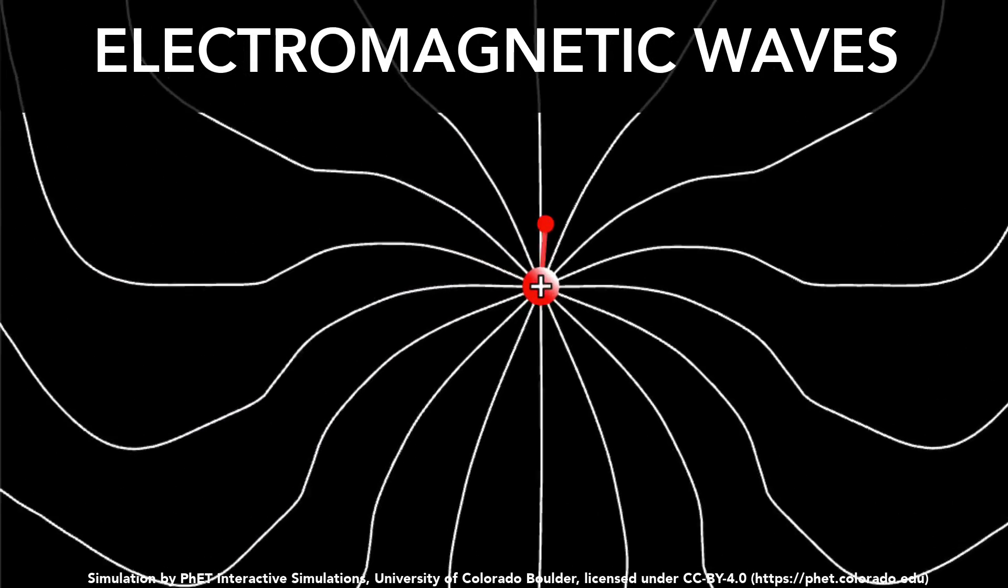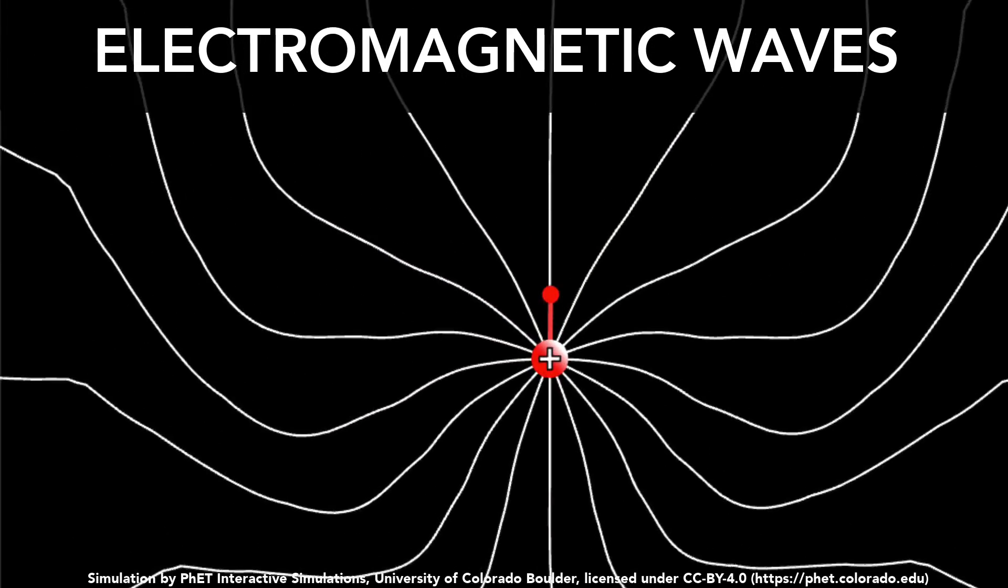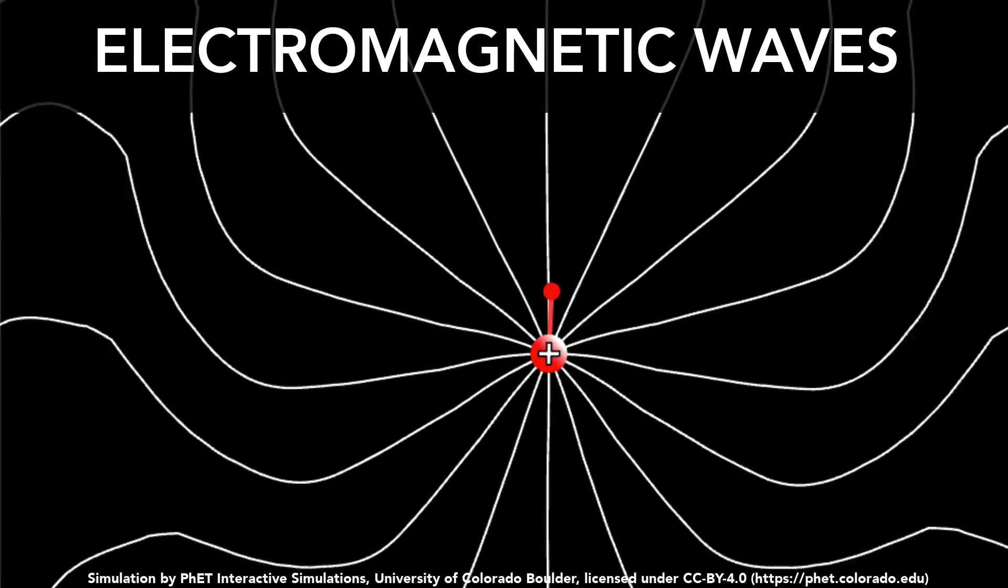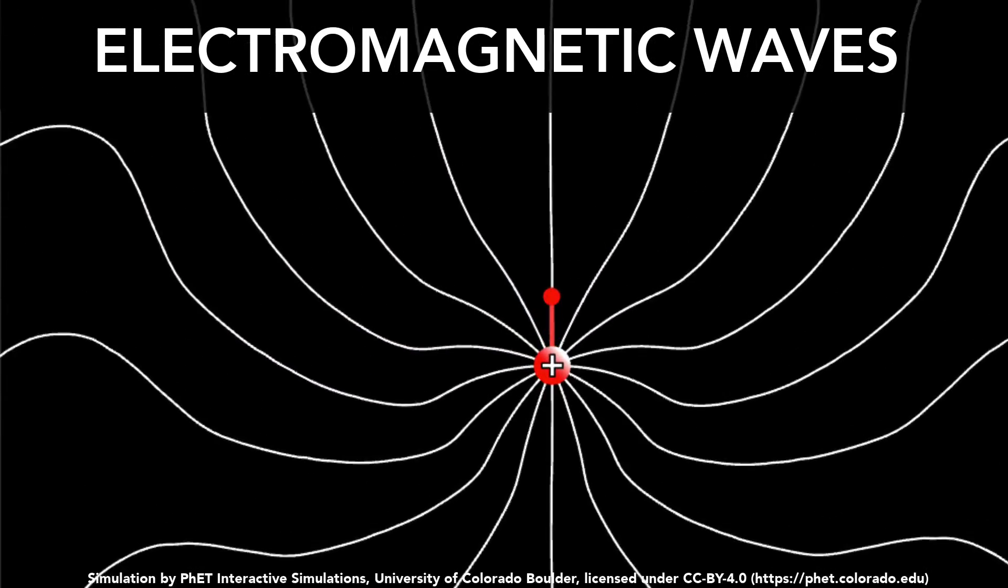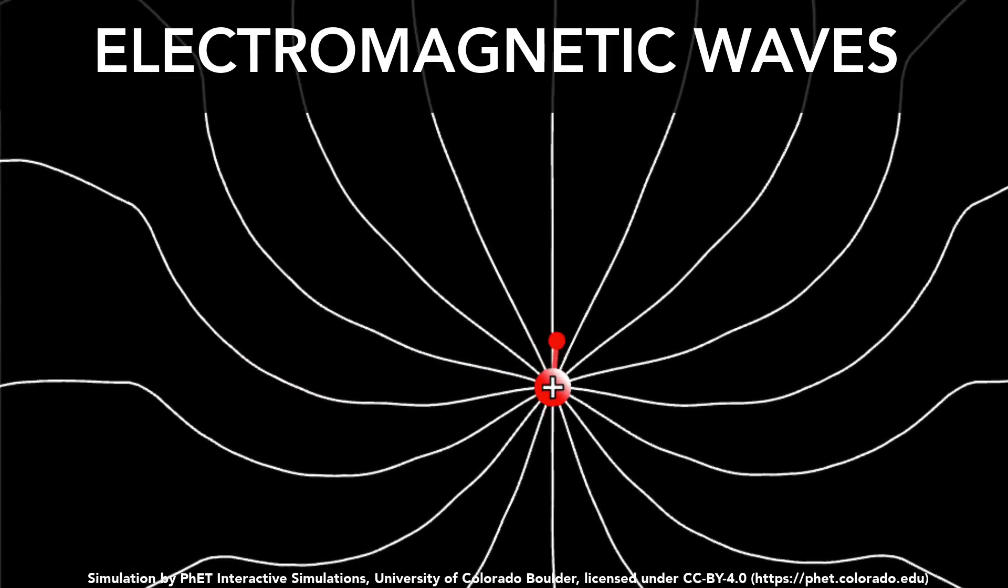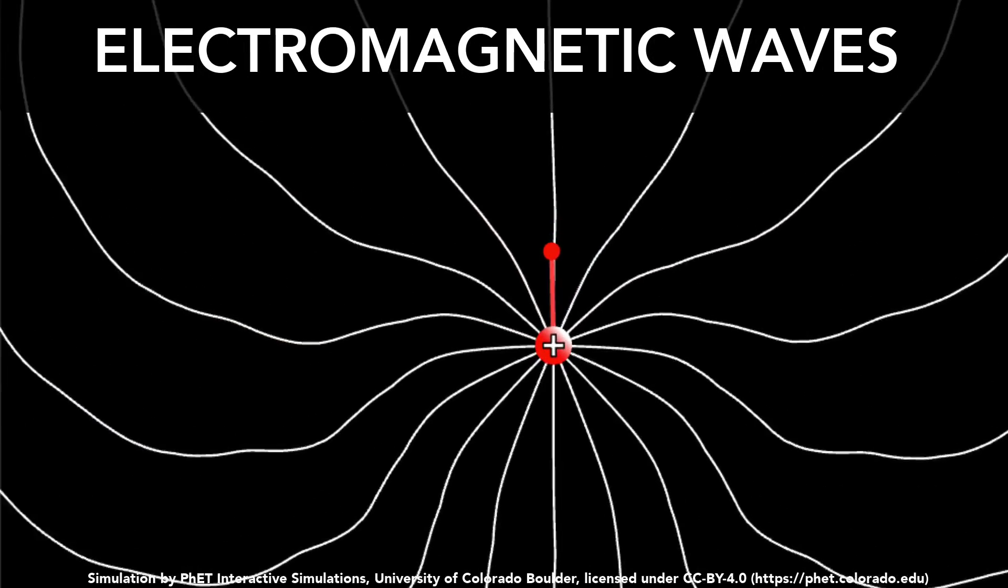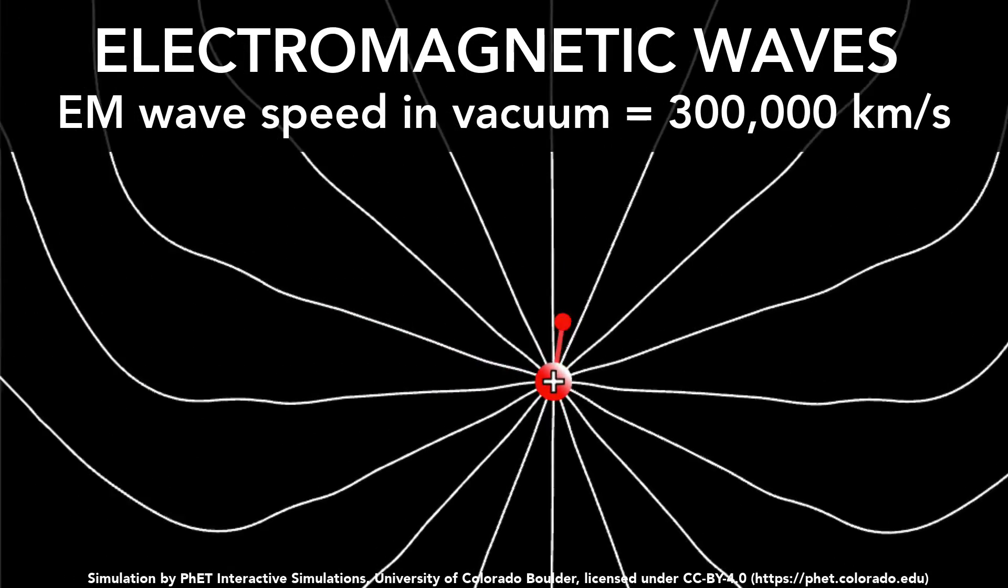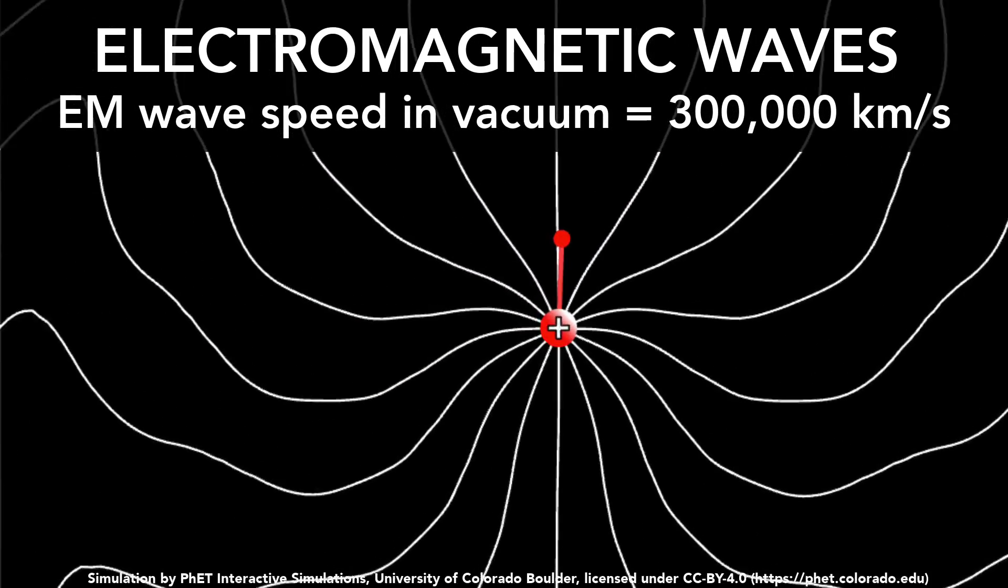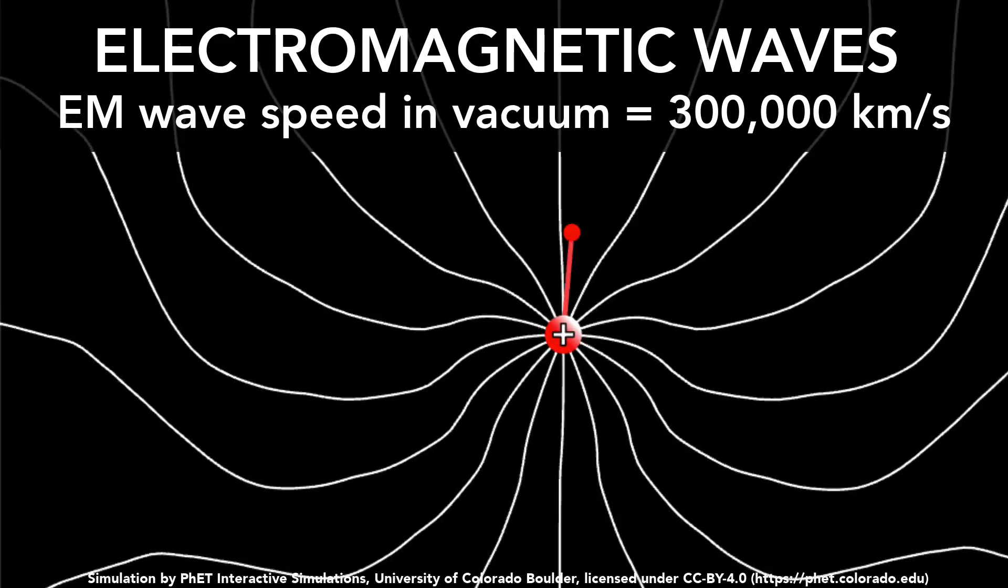And that electromagnetic wave is light. And so just like any wave, it will have properties like the speed. You can see this particular speed at which the wave is emanating outwards. In vacuum, the speed of an electromagnetic wave happens to be 300,000 kilometers per second. It's very fast, the fastest thing in the universe.